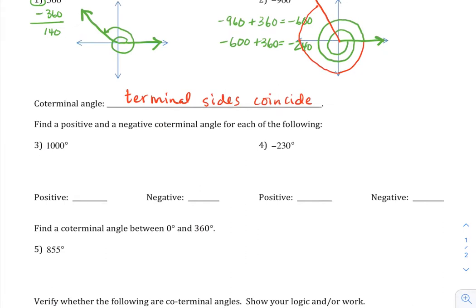So for 1000 degrees, I want a positive and a negative coterminal angle for that. So what I can do is just add and subtract 360 degrees. I'm going to subtract 360 and I get 640 degrees. So there's one option for my positive coterminal angle. But I could keep going. I could subtract another 360 and this time I'll get 280 degrees.